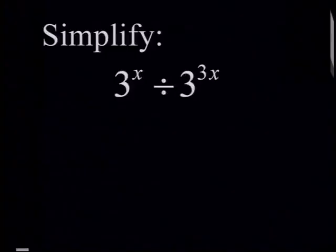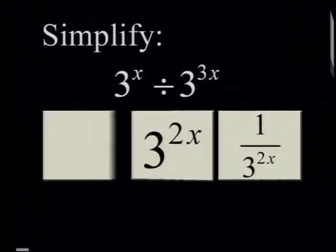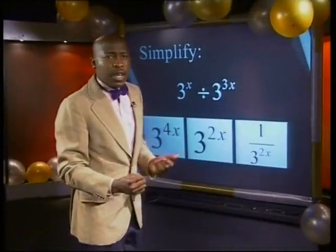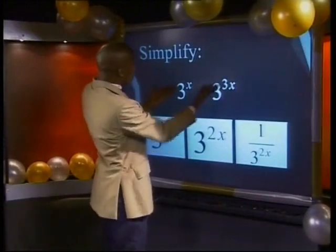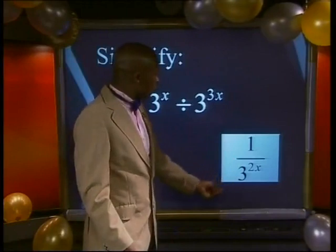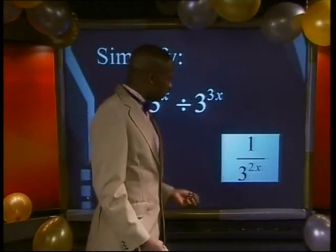Try this one: 3 to the power of x divided by 3 to the power of 3x. Give it a go. How did you do? You can see that it's straightforward subtraction of the exponents, so the answer for this one is 1 divided by 3 to the power of 2x. How many did you get right so far? I'm sure you're doing well.